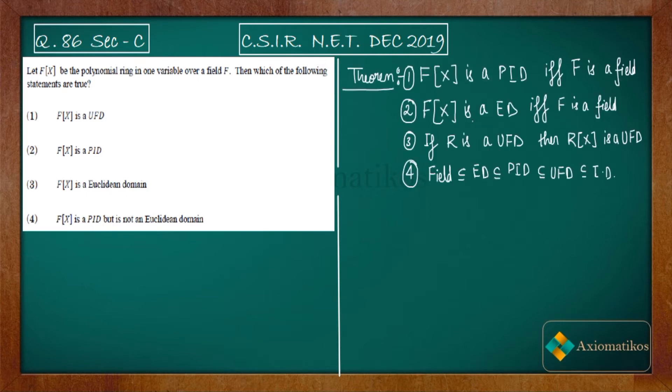We have four results for you. Let us read them line by line. f(x) is a PID, principal ideal domain, if and only if f is a field. f(x) is a Euclidean domain if and only if f is a field.